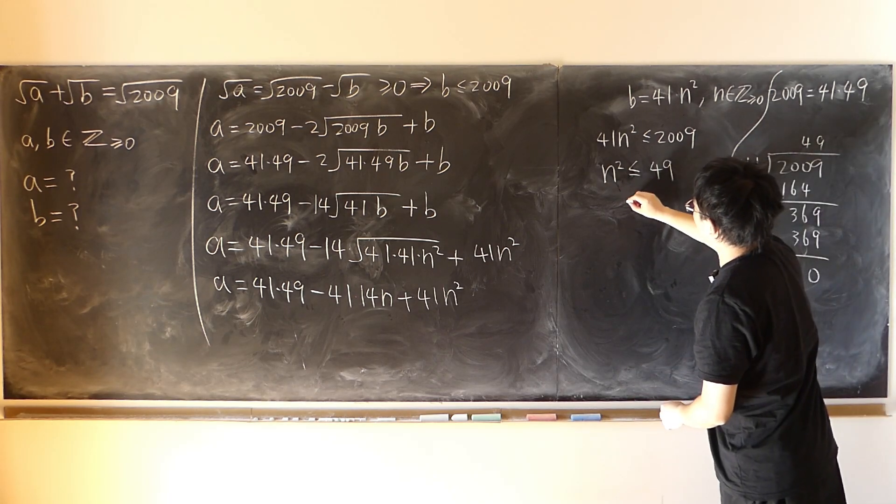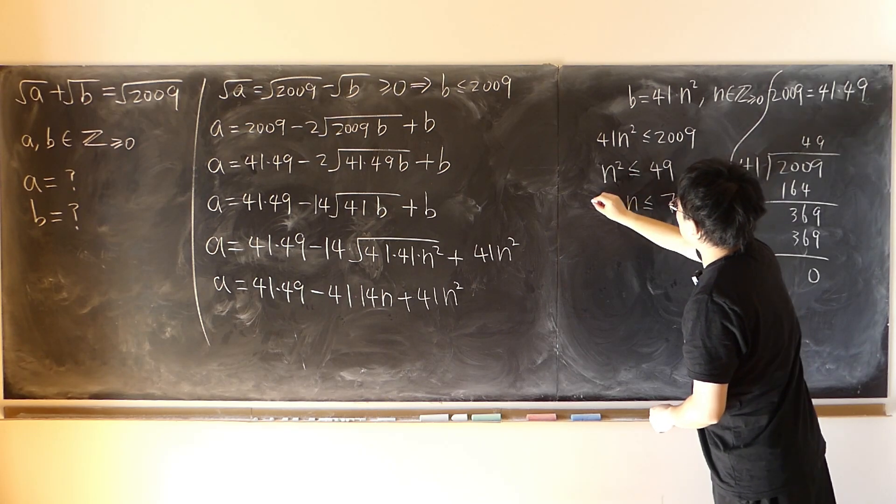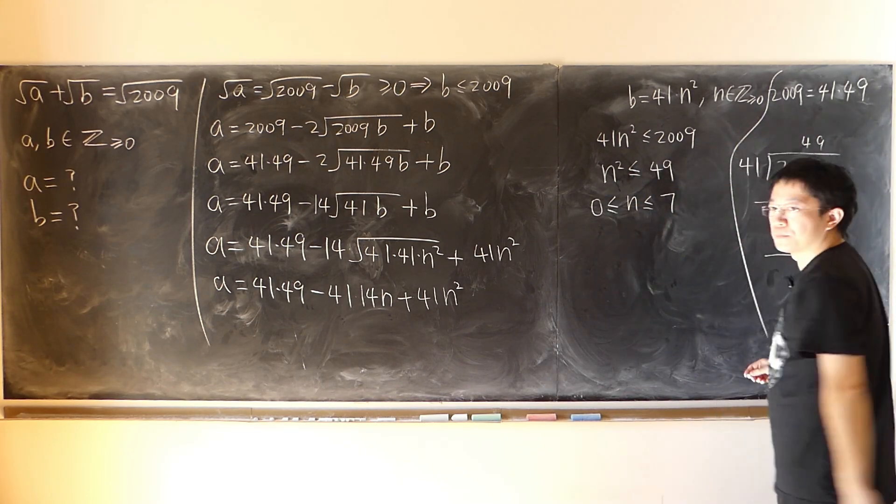So immediately, n is less than or equal to 7. And bigger than or equal to 0. 0 is allowed.